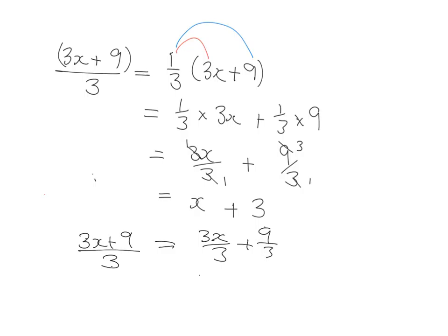So we don't have to go through all these steps here if we have them in our head. This is a third of 3x plus 9, so we're distributing - it'll be a third of 3x plus a third of 9 - and then we cancel those down using our fraction laws to get x plus 3.